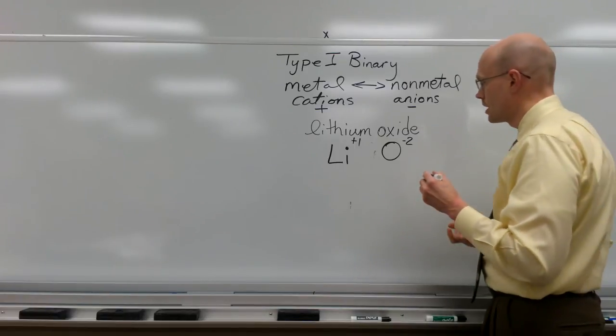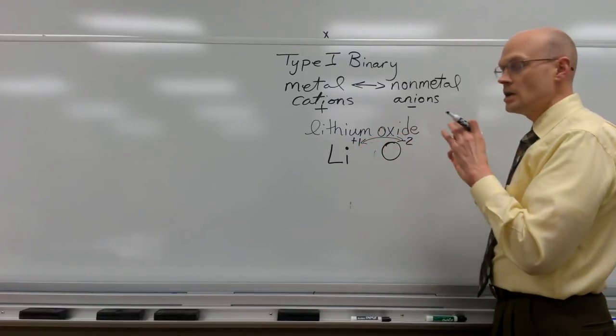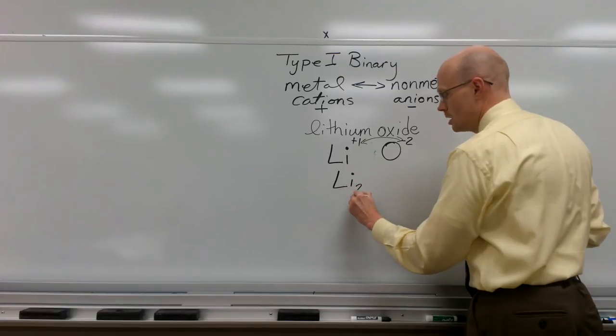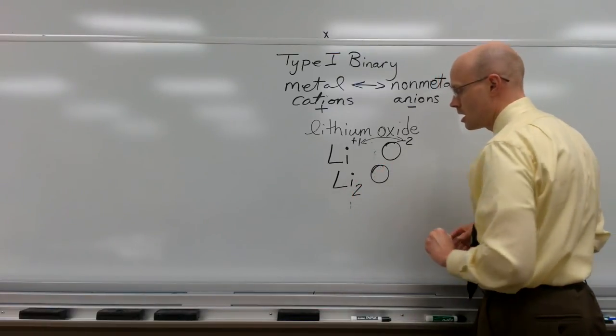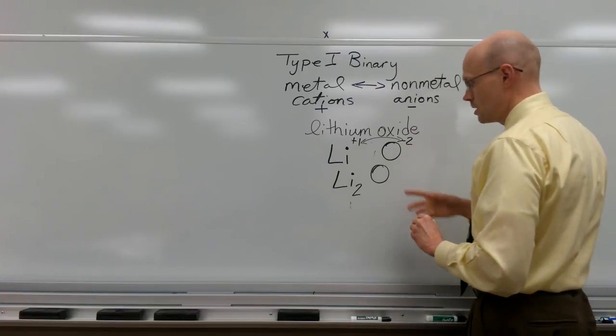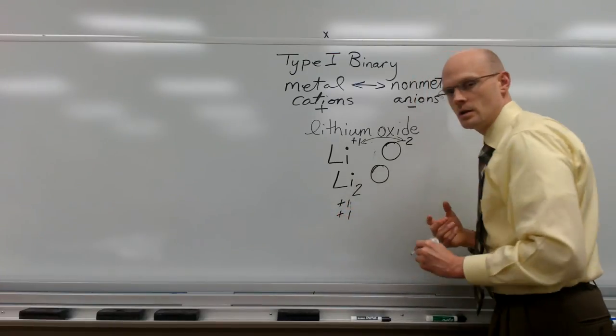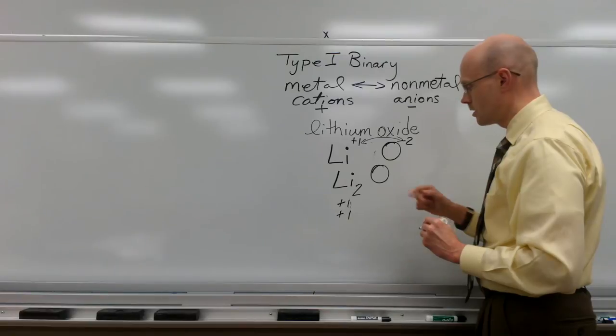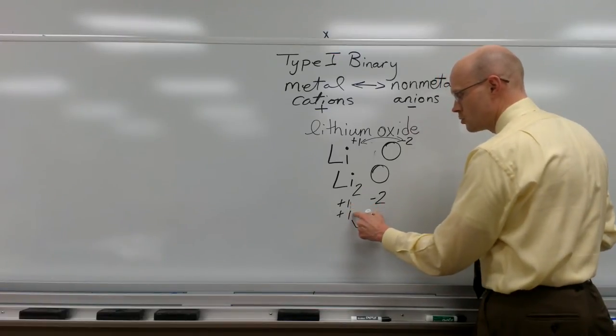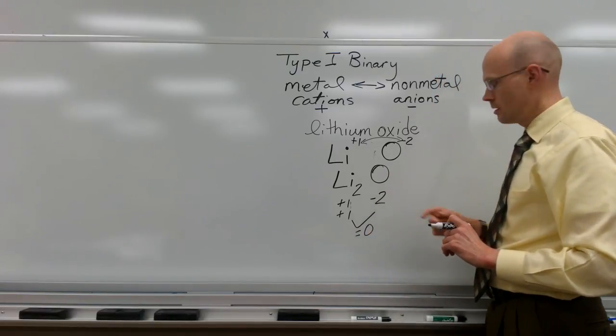So the easy way of determining that ratio is taking the charges and crossing them over. So that we get the appropriate ratio. So we need lithium. We need two of those. And one of the oxide ions. See how we cross the two over, the one over. Because that would tell us that if we have two lithium ions, plus one and plus one, it's the representative charge of each ion there. And the single oxide with a negative two. We know then that one plus one minus two is equal to zero. Charge neutral.